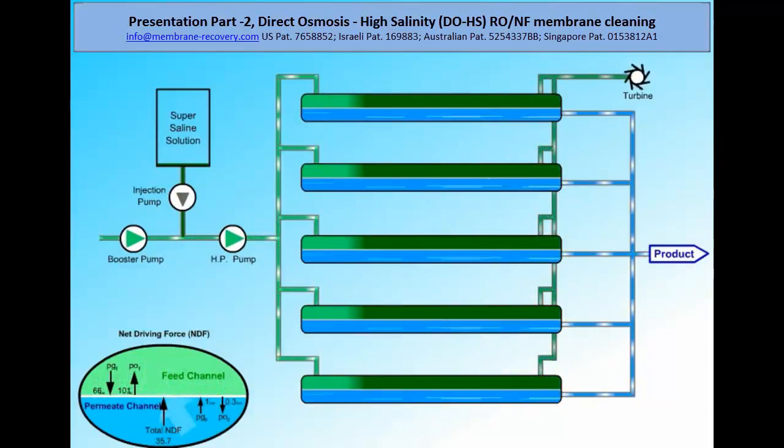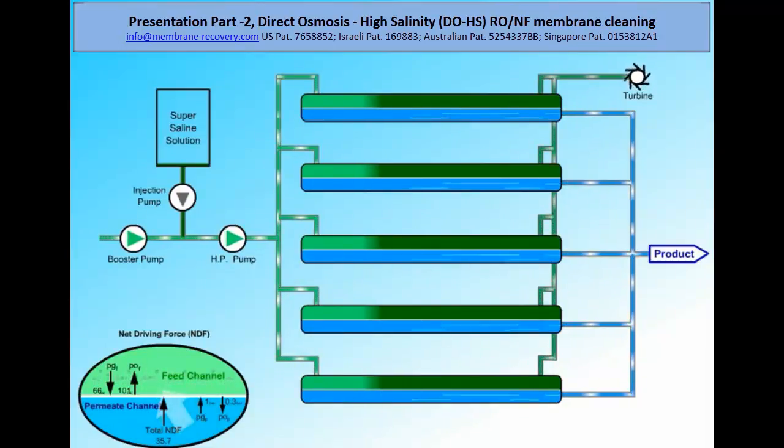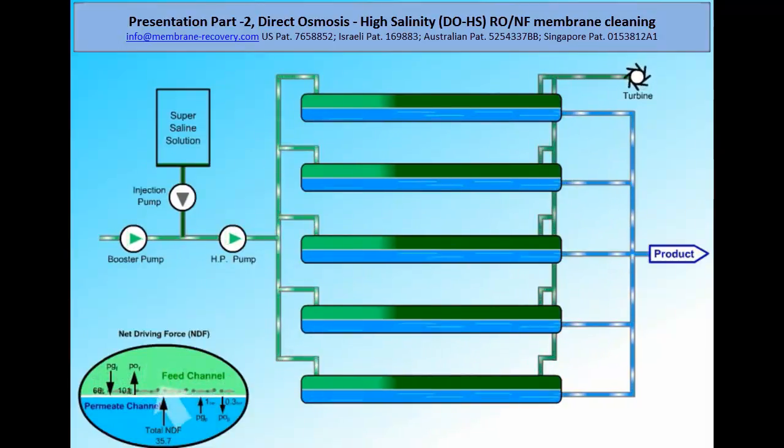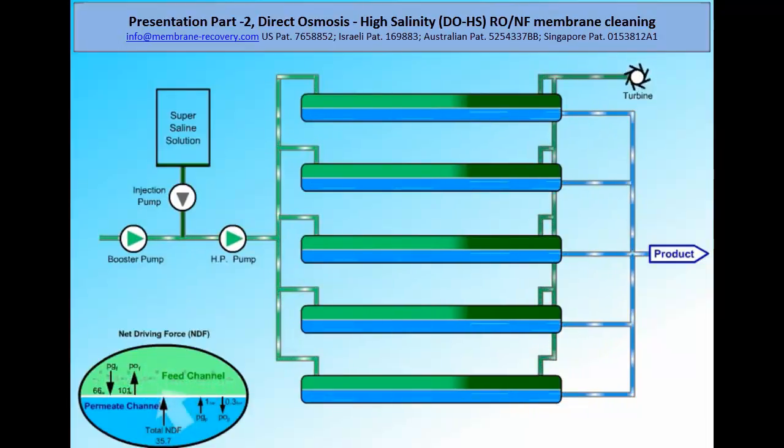And third, control the right reject flow movement with fouling out from pressure vessels. In the oval below, it's clear that the net driving force is redirected from a reverse osmosis to a direct osmosis process. The permeate moves from a permeate channel into a feed channel.